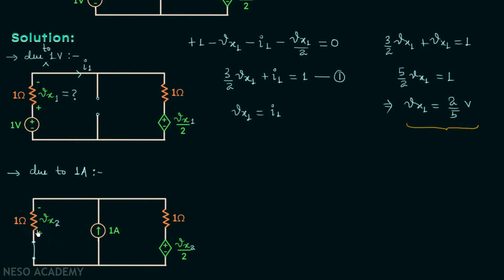To find Vx2, we need the current through this resistor, and for that we will use nodal analysis. The reference node is identified, and the principal node has voltage V. Since this node has the largest voltage, currents will leave it. We label them I1, I2, and I3. The potential at the reference is 0 volts, so the potential at the other end of the dependent source is minus Vx2, and since there is no resistance in that wire, V equals minus Vx2.